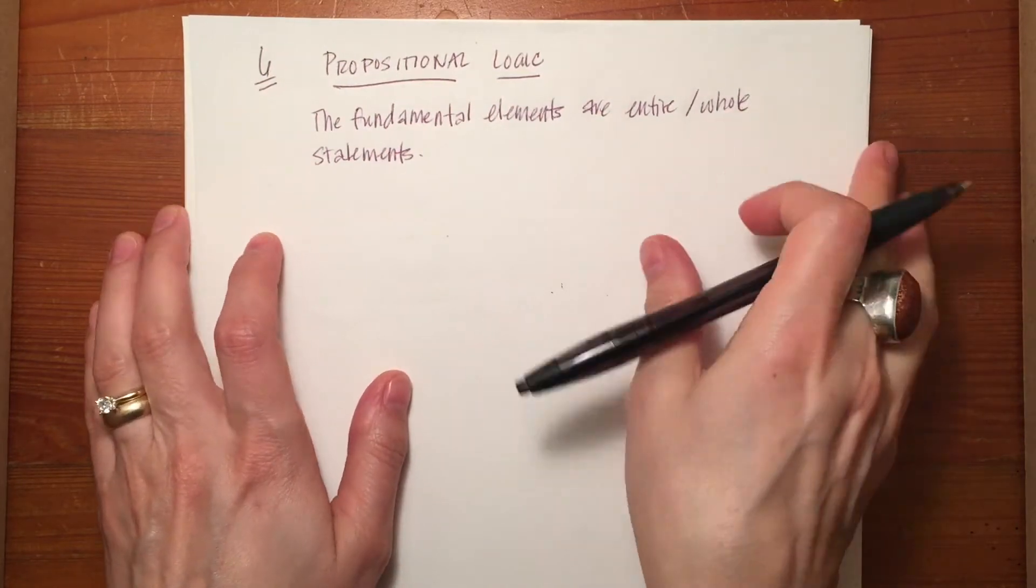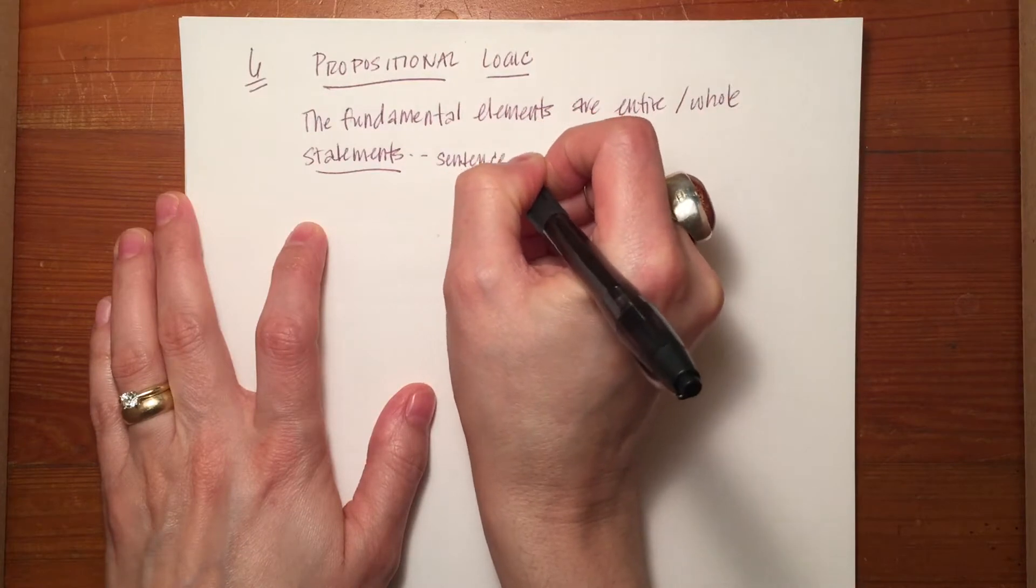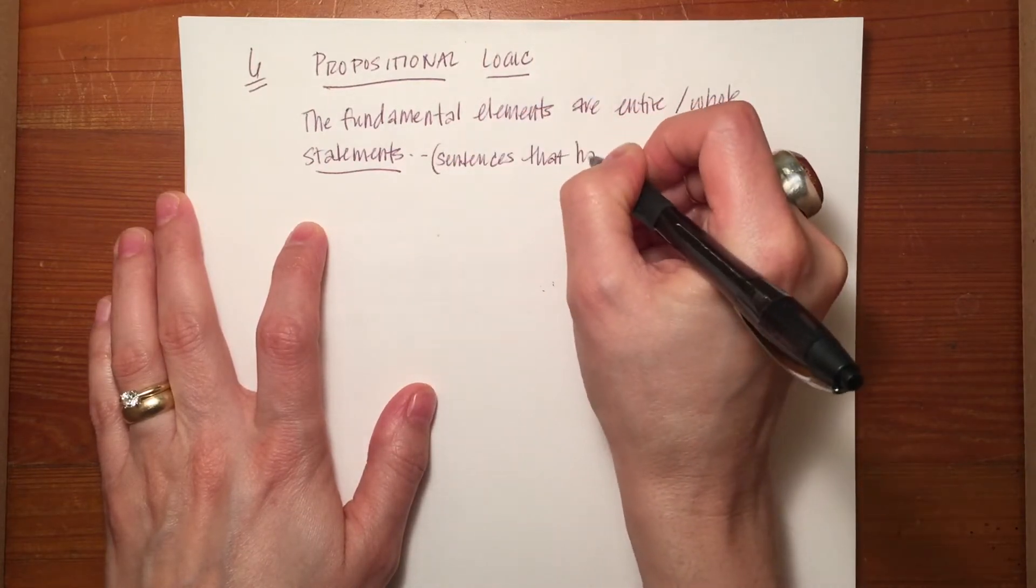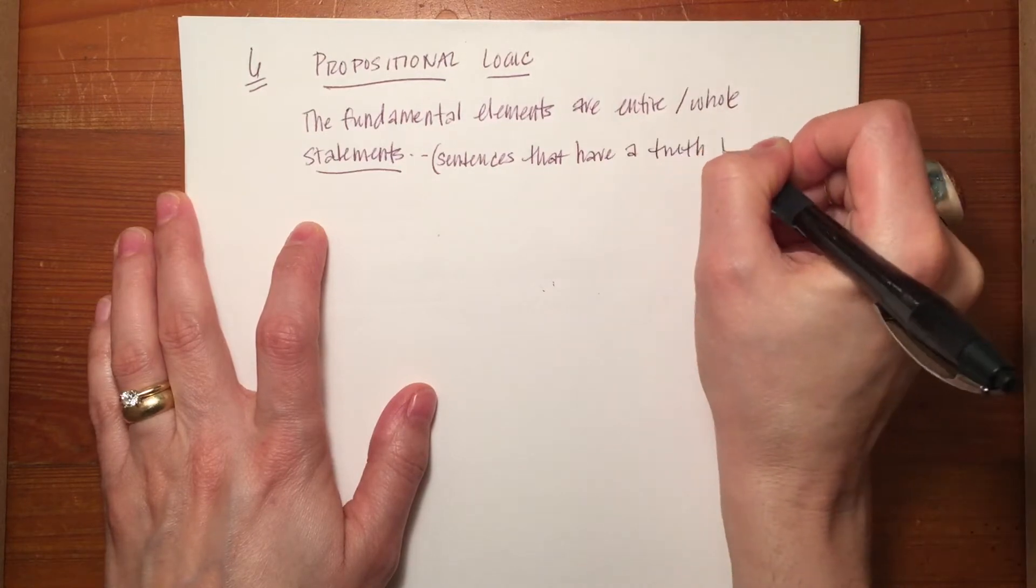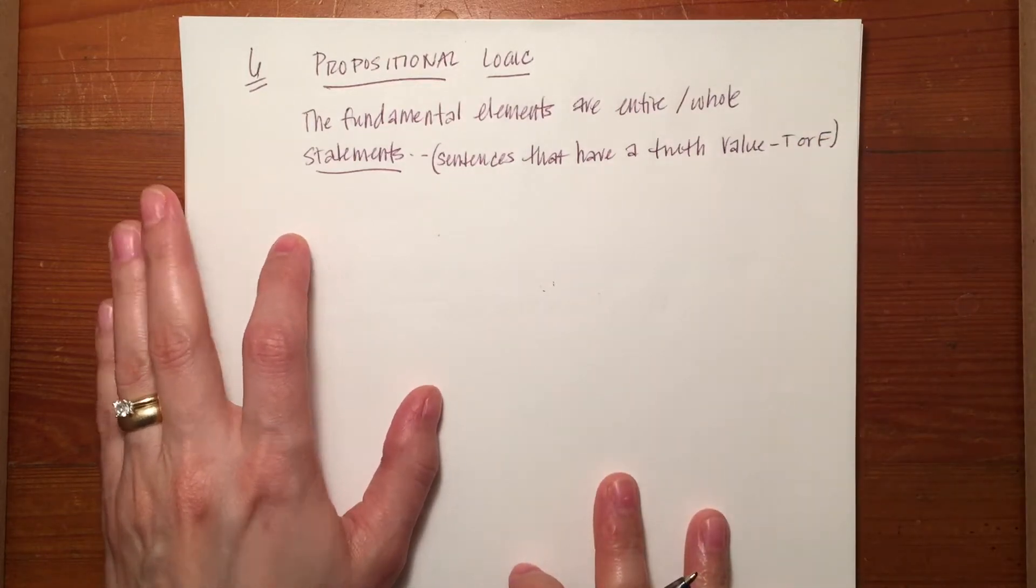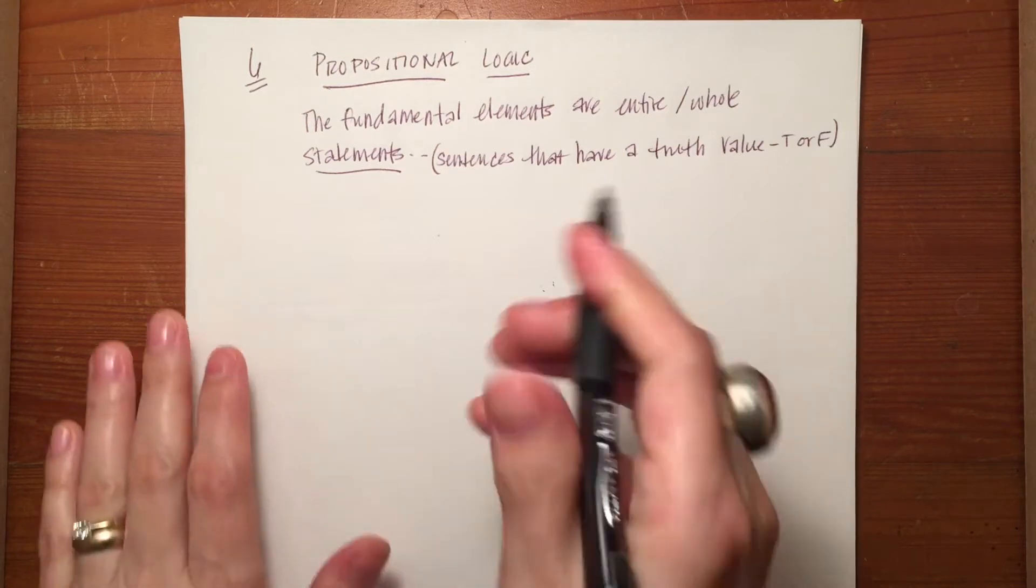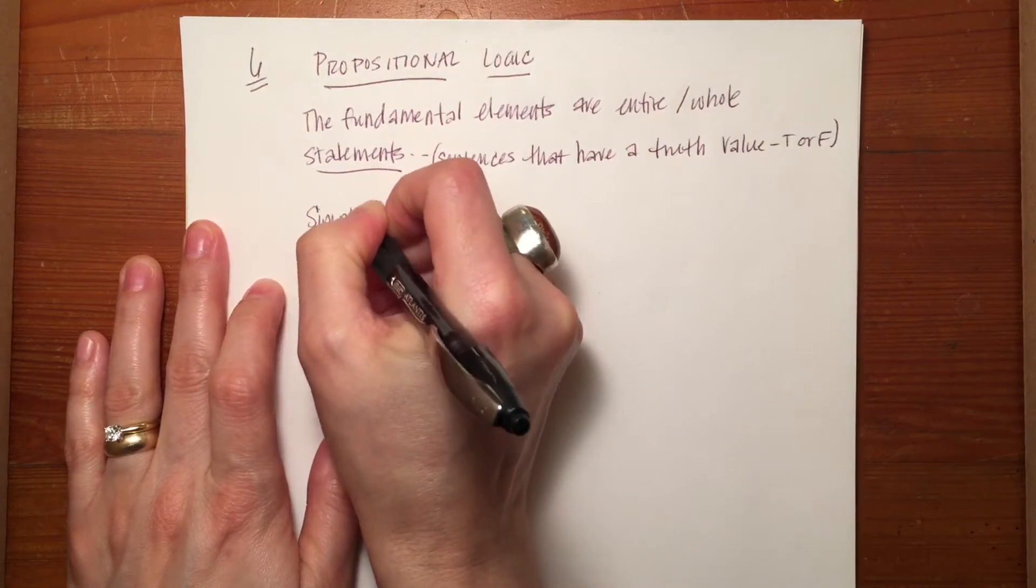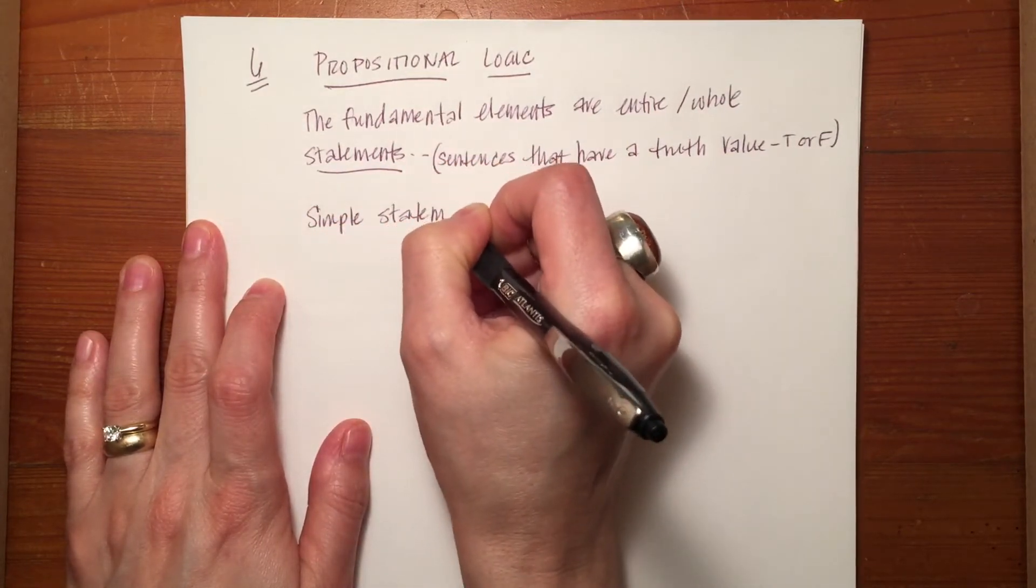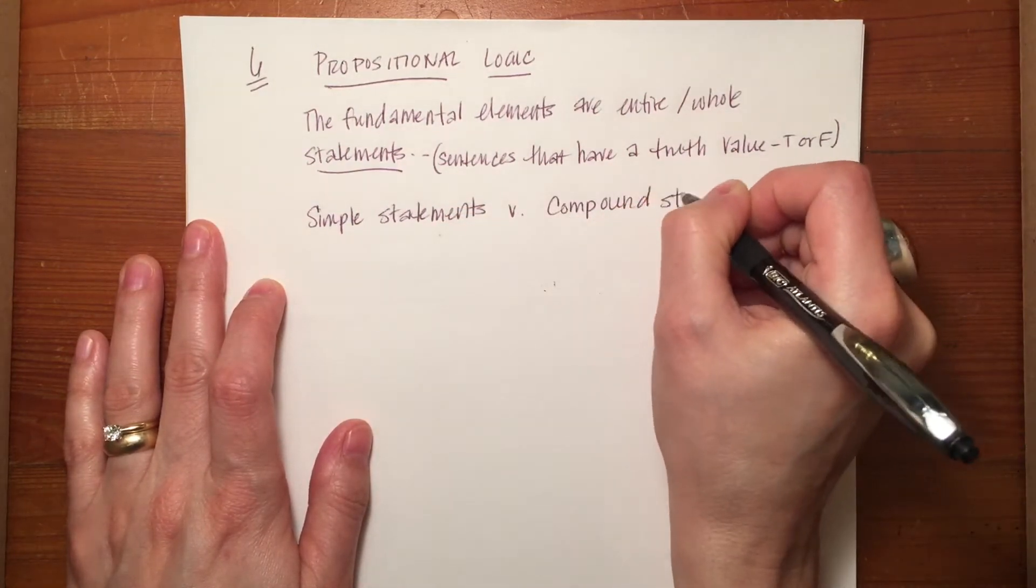Now you'll remember that statements are sentences that have a truth value, true or false. So some examples of statements that are given on page 311 of your textbook are divided into two different categories.